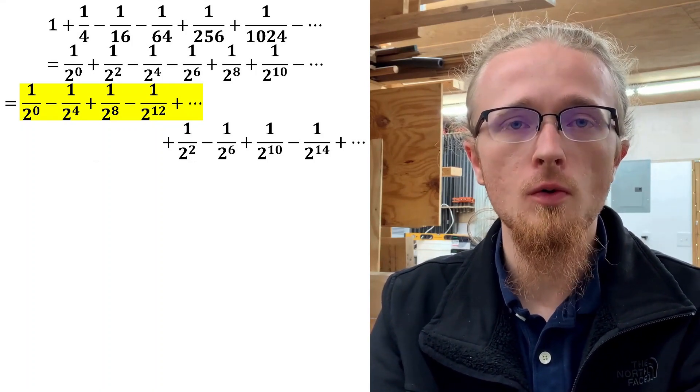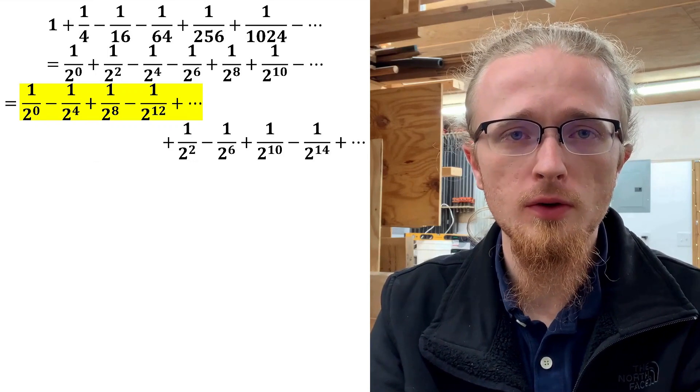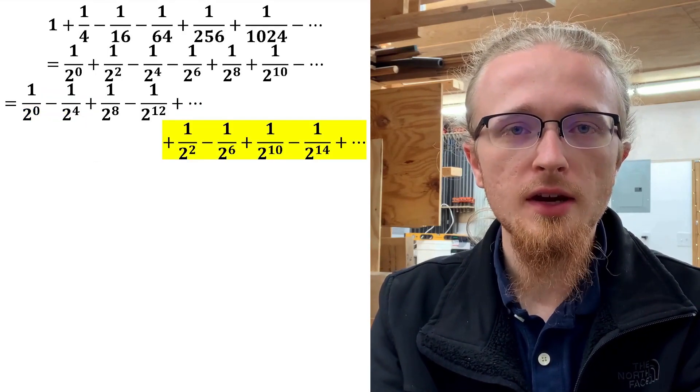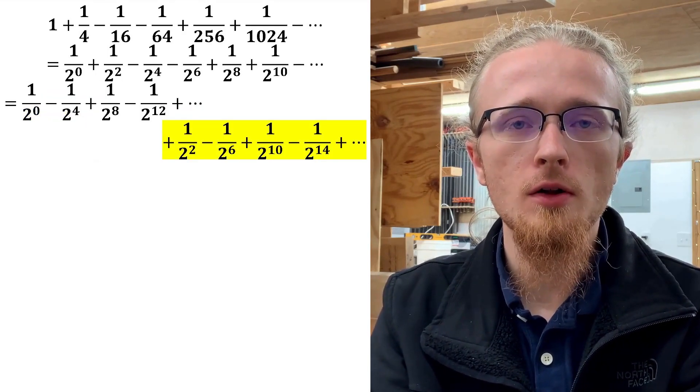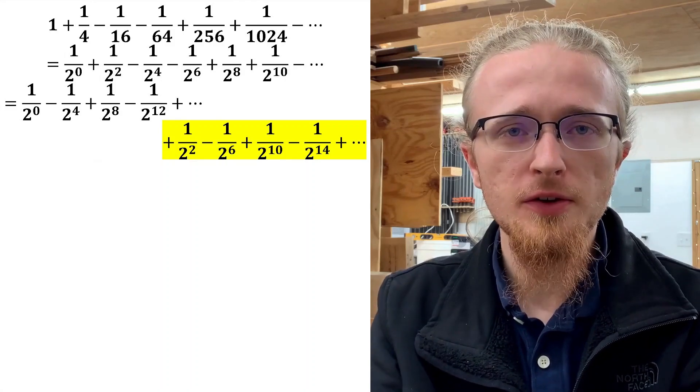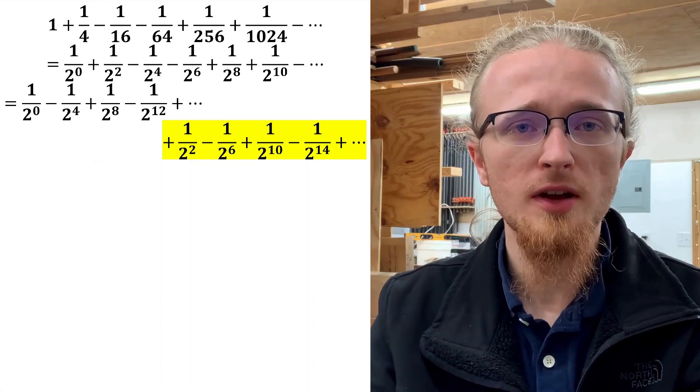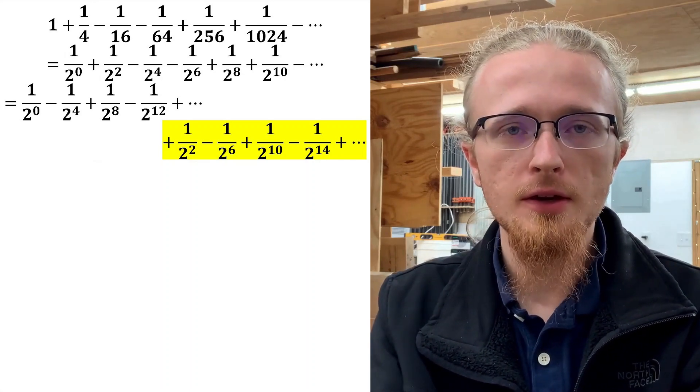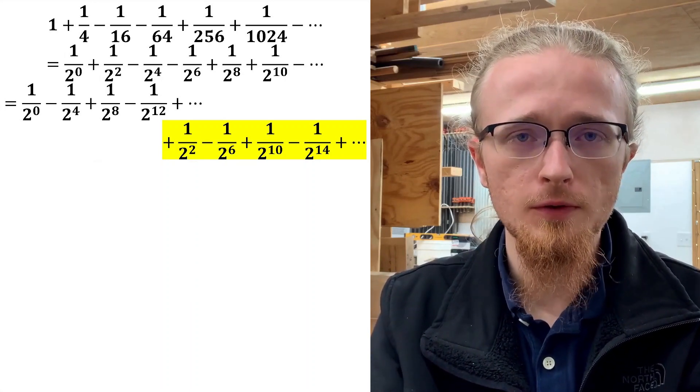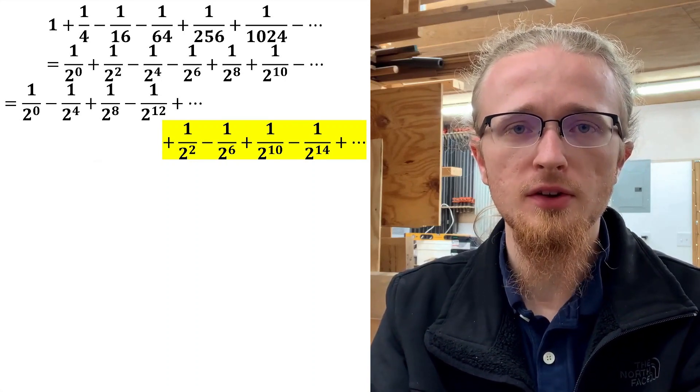So 1 over 2 to the 0, 1 over 2 to the 4th, 1 over 2 to the 8th, etc. And the second series simply involves all the rest of the terms. Specifically, this ends up being the terms with 2 to the power of a multiple of 4 plus 2. So we have things like 1 over 2 squared, 1 over 2 to the 6th, 1 over 2 to the 10th, etc.